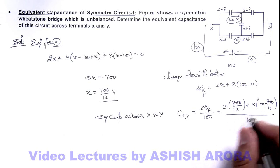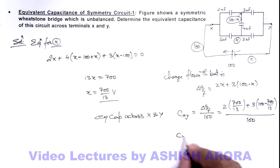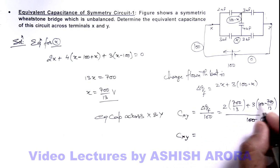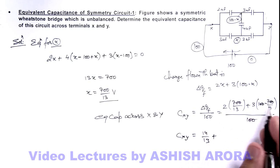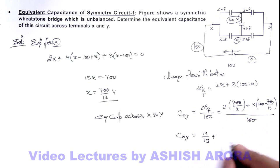So here we can see the result Cxy we are getting is, this hundred gets cancelled out, this is 14 by 13 plus this will be 6 into 3, this is 18 by 13, that is 32 by 13 microfarad. That is the result of this problem.